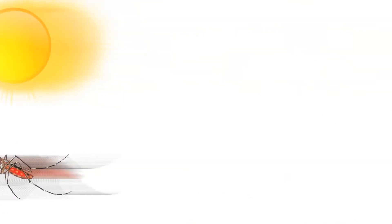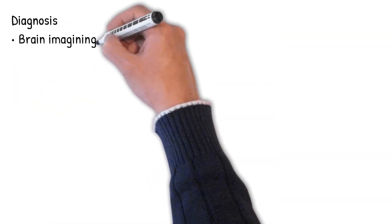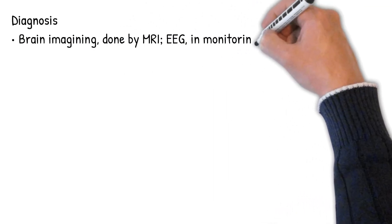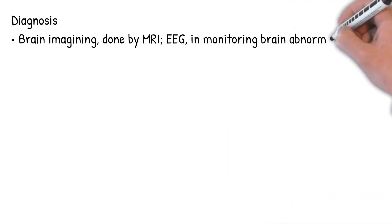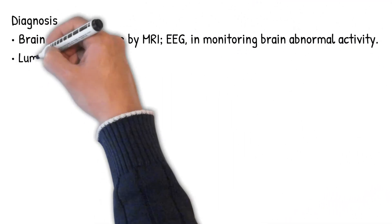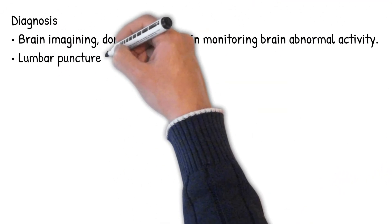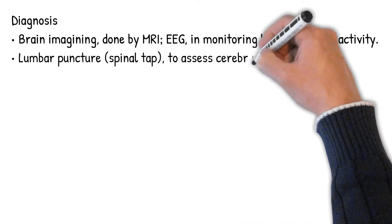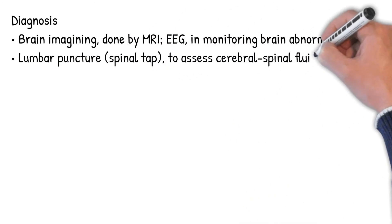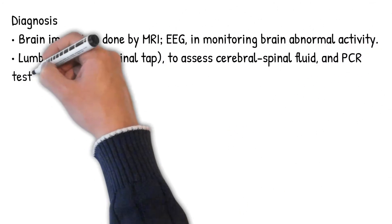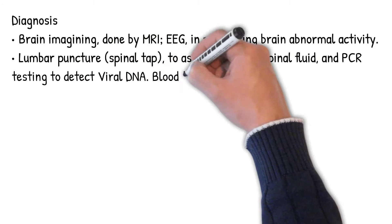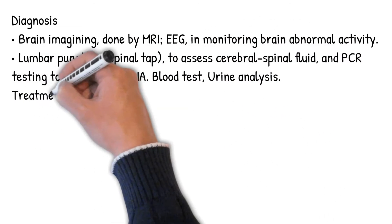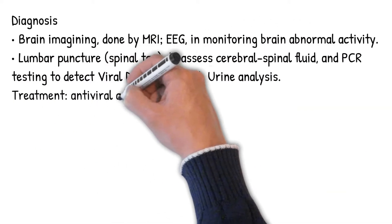Diagnosis: brain imaging done by MRI and EEG for monitoring brain abnormal activity. Lumbar puncture, or spinal tap, to assess cerebrospinal fluid, and PCR testing to detect viral DNA. Blood test and urine analysis.